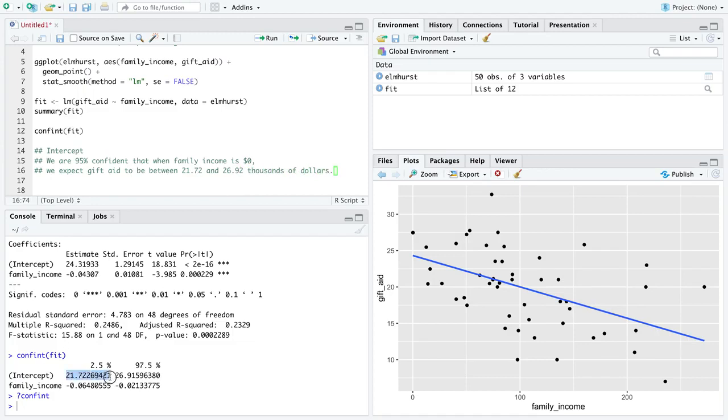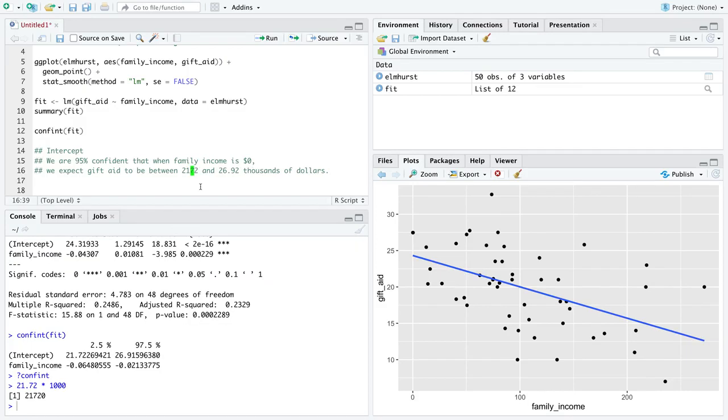Okay, we can clean that up, right? If we take 21 rounded to two decimal places and multiply it by thousands of dollars, we can just go 21 thousands of dollars. That sentence makes a lot more sense to me. Here is the blending of a confidence interval interpretation with an intercept interpretation. We are 95 percent confident that when family income is equal to zero, we expect gift aid to be between $21,000 and $26,000. So somewhere in this range is what we think the mean gift aid will be when family income is equal to zero. Okay, that wasn't terrible, was it?